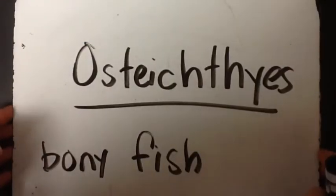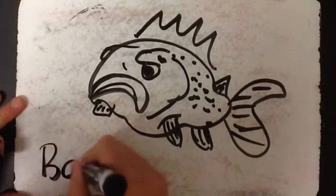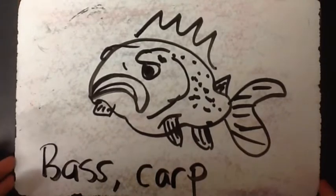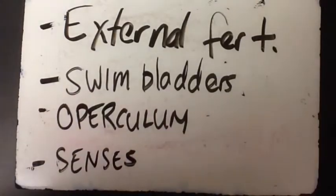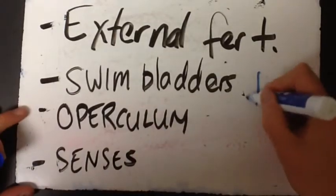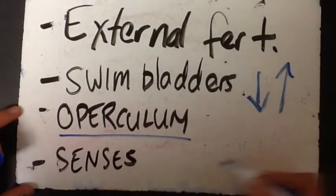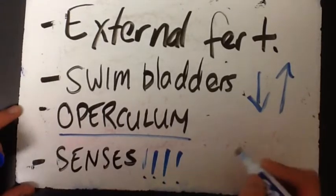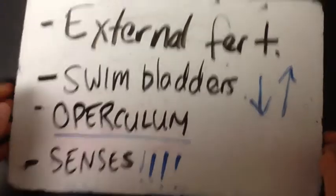Next up, we have our Osteichthyes — our bony fish. These are like bass, trout, and carp. Some major characteristics are that they have external fertilization, swim bladders (a special organ that helps with buoyancy), and an operculum, which is a special flap of skin that covers the gills. They also have well-developed senses of smell and taste.